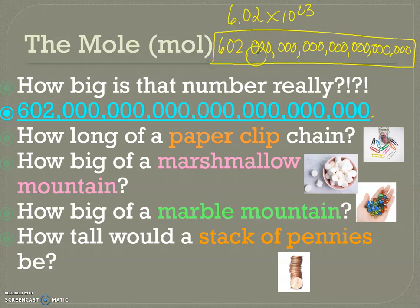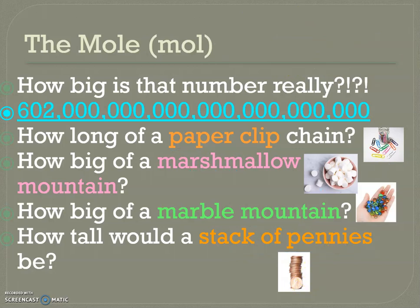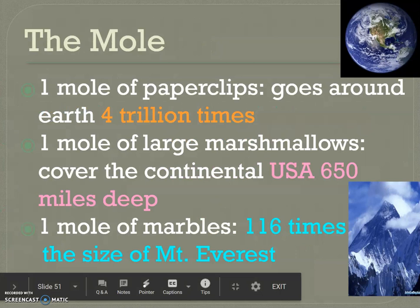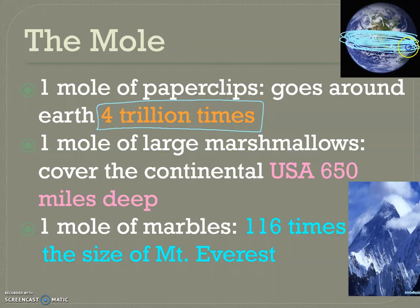That is a whole heck of a lot of zeros — this is why we use scientific notation. It's a huge, gargantuan number, and it's time to pay it some respect. How big is it? A mole of one-inch paper clips linked together goes around the Earth four trillion times. A mole of those large marshmallows — the ones you use for s'mores — would cover the entire United States, but 650 miles deep.